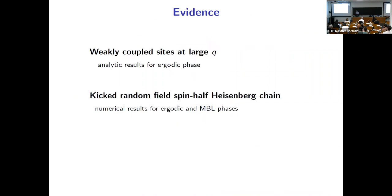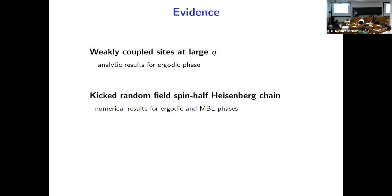In the ergodic phase, there's a way of constructing quantum circuits that's exactly solvable in the limit of large local Hilbert space dimension Q, and you can verify it gives exactly the behavior I described from the transfer matrix. But you can also go to a more generic problem that doesn't use the large-Q limit, which importantly gives access to both phases, and then you can do numerics.